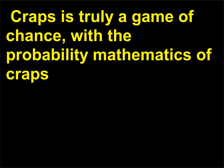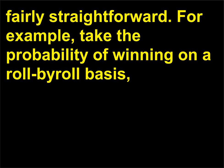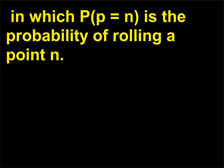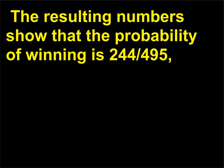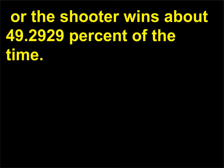Craps is truly a game of chance, with the probability mathematics of craps fairly straightforward. For example, take the probability of winning on a roll-by-roll basis, in which P equals N is the probability of rolling a point N. The resulting numbers show that the probability of winning is 244/495, or the shooter wins about 49.29% of the time.